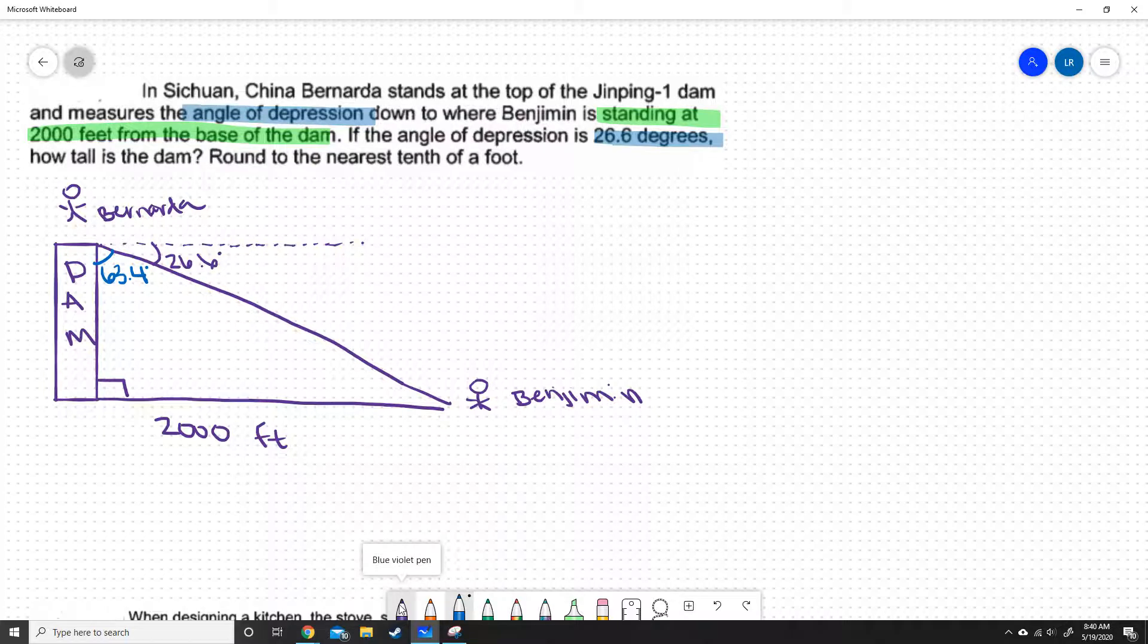The other cool thing is that this is really a set of parallel lines. This line here and this line here, they're parallel. And if those are parallel, this line here is a transversal, which would make this angle here 26.6 degrees, because those are opposite interior angles, which are the same.